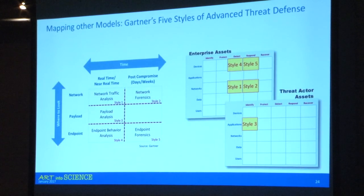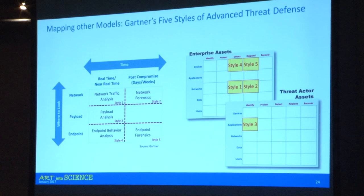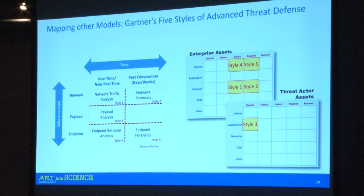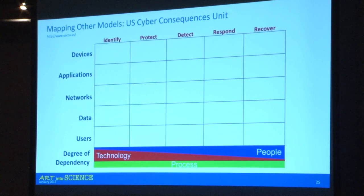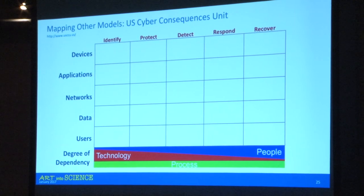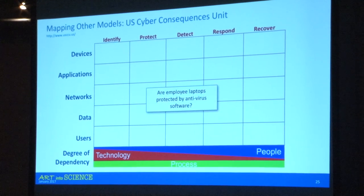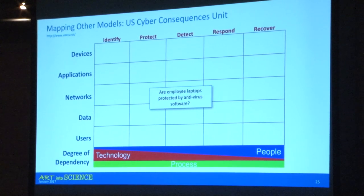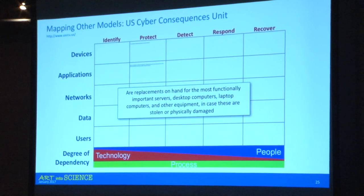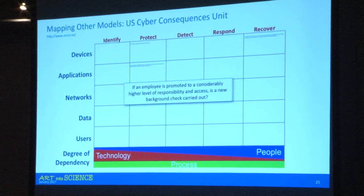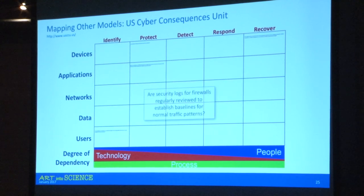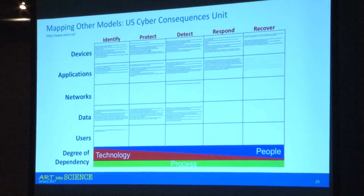Other models: Gartner has a model for the five styles of advanced threat defense, and here's how it fits into the matrix. There's also a model by Scott Borg from the U.S. Cyber Consequences Unit — it looks remarkably similar. I took all the questions from their checklist, which are yes/no questions, and mapped them into the matrix to show how they all fit.